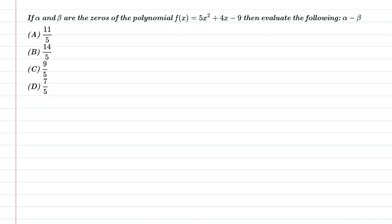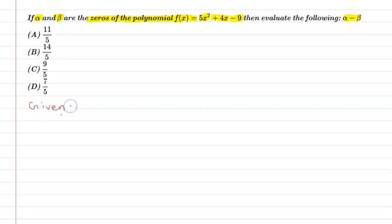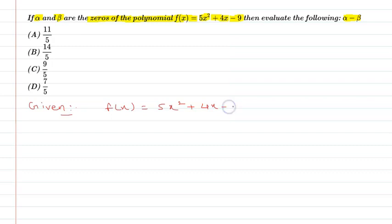Hello students. First of all let us understand the question. The question is: if alpha and beta are the zeros of the polynomial f(x) = 5x squared plus 4x minus 9, then evaluate alpha minus beta. So the given polynomial is 5x squared plus 4x minus 9 and alpha and beta are the zeros.